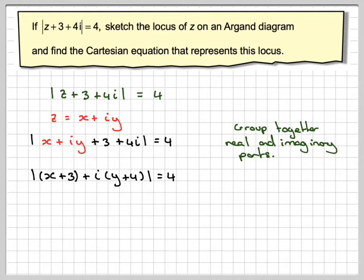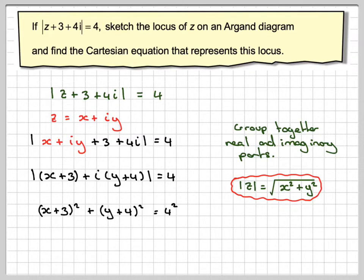Now, if we want to find the modulus of a complex number, we take the real bit and the imaginary bit and apply Pythagoras to it. So it's x squared plus y squared and then take the square root. But instead of taking the square root, let's square the 4, then we won't have to take the square root. So this will become x plus 3 squared plus y plus 4 squared is equal to 4 squared or 16.